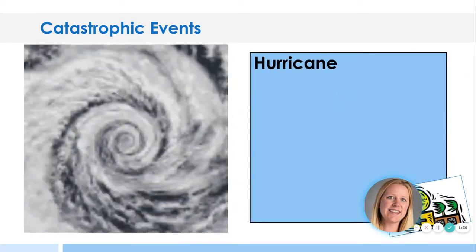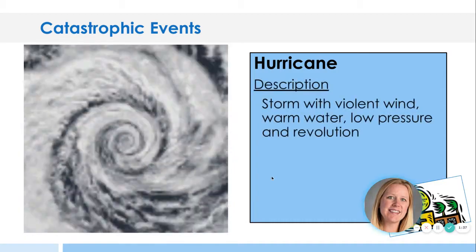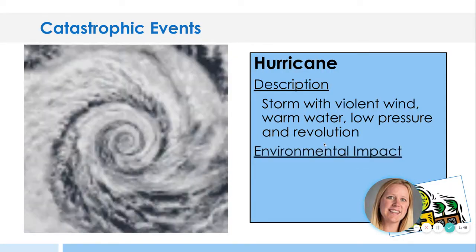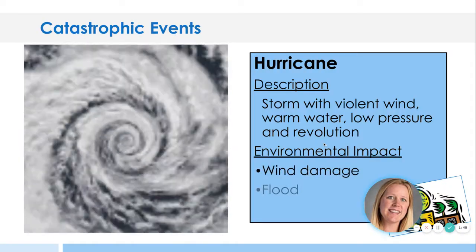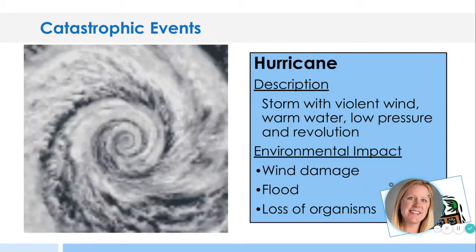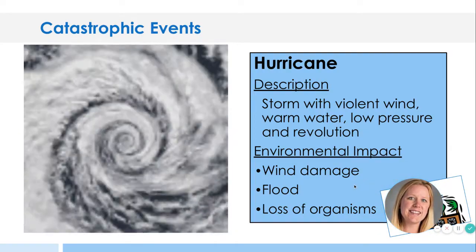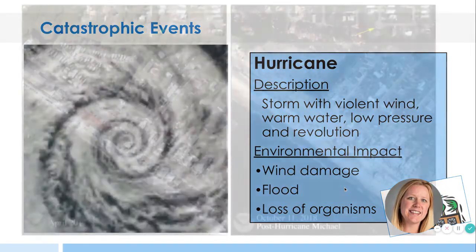Let's talk about a hurricane. A hurricane will develop over warm water with low pressure, so it does not happen in the cooler months — it's going to happen in a warmer environment. There will be wind damage, flooding, and once again, loss of organisms. Plants and animals can be completely destroyed because of a hurricane that's come from the ocean.